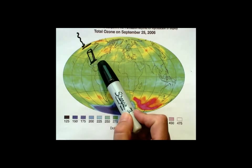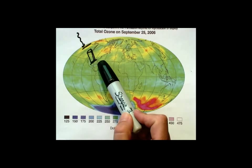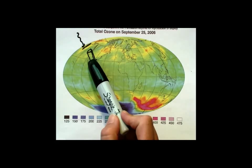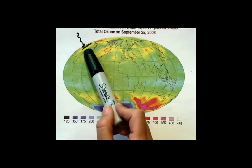And so when we talk about Dobson unit, we're talking about how much ozone is in this column. And what we're hearing now is that the way they detect how much ozone is in the column is by comparing the amount of ultraviolet light that would be at the top of the column versus the amount of ultraviolet light that would be detected at the bottom of the column.